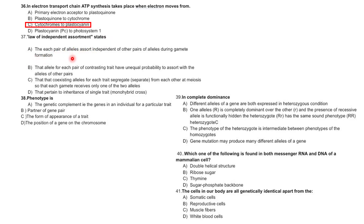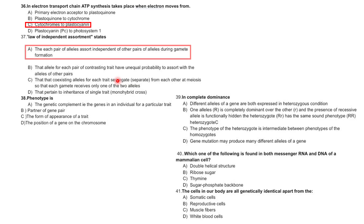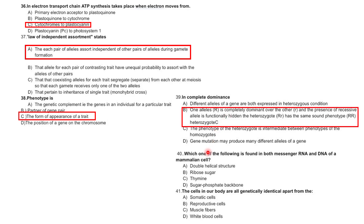The law of independent assortment states that each pair of alleles assorts independently of other pairs of alleles during gamete formation. Phenotype is the form of appearance of a trait. In complete dominance, the dominant allele completely appears and the other is completely masked; the dominant trait appears in both homozygous and heterozygous conditions.